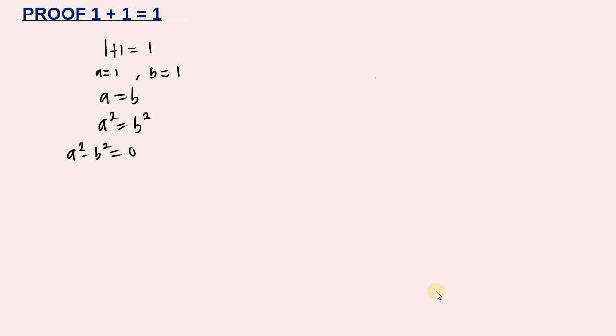Now we are going to take the difference of two squares. We know that if two numbers are equal, their squares are equal. So factoring gives us: a minus b, multiplied by a plus b, is equal to zero.